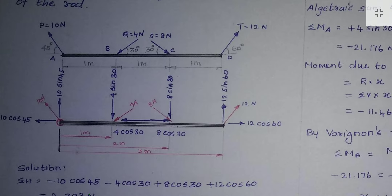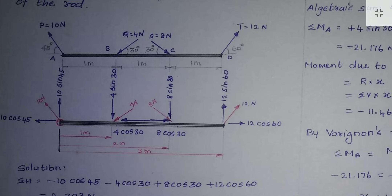Similarly, the 4 Newton force acting at 30 degrees is also resolved into two components — one horizontal and one vertical. While resolving, the horizontal component is towards left and the vertical component is a downward force. The horizontal component value is 4 cos 30 and the vertical component is 4 sin 30.